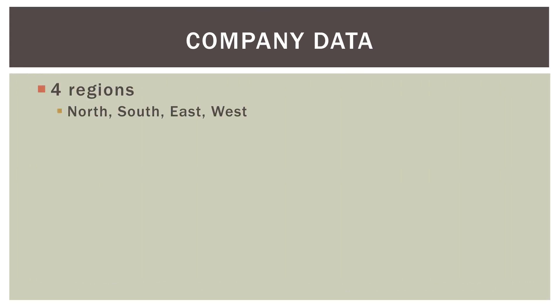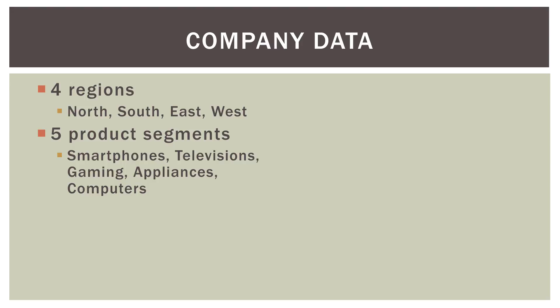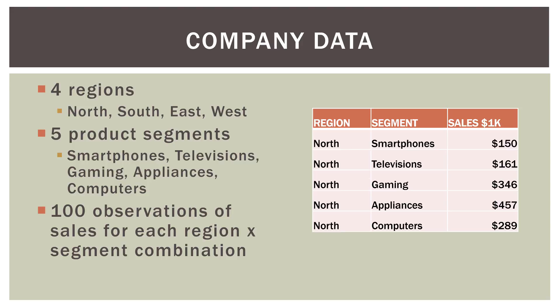Let's talk about the company data we'll use for this video. We have a dataset with four regions: north, south, east, and west, and five different product segments: smartphones, televisions, gaming, appliances, and computers — imagine a fictitious electronics company like Best Buy. We have 100 observations of sales for each region-segment combination. For example, the north region had smartphone sales of $150,000 and television sales of $161,000.